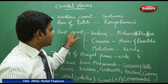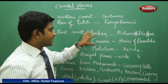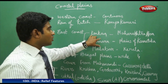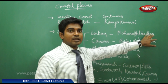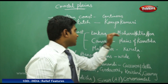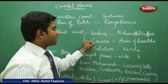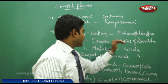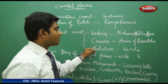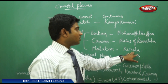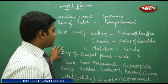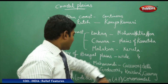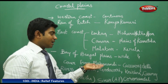When it comes to the eastern coast, we have a division into two to three parts: Konkan, which is the region from Maharashtra and Goa; then Kannada, which covers the plains of Karnataka; and then the Malabar coast, which is the region of Kerala.